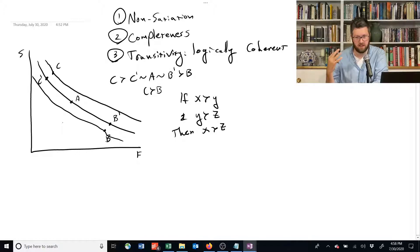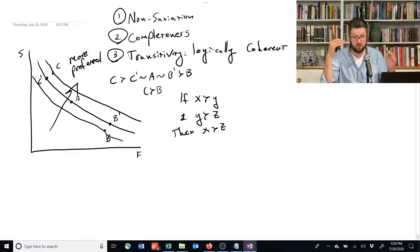And just like those isoquants, as we go in this direction, we're getting to more preferred bundles. That's because we have more food and shelter as we move in that direction.